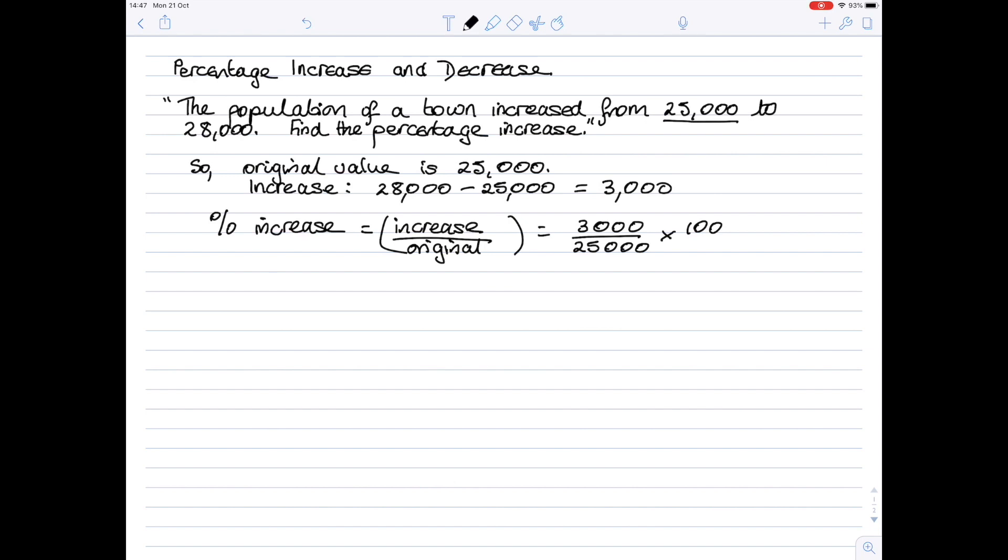Lots of cancelling to do here. Those three zeros will cancel with those three zeros. The 100 you can think of as 100 over 1. So I can cancel the 25 with the 100, and 25 goes into 100 four times. So all I'm left with is 3 times 4, which is 12. So our increase is 12 percent.